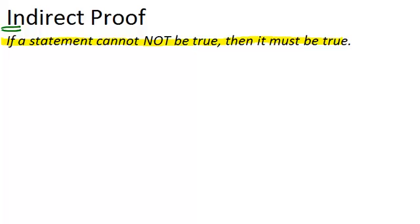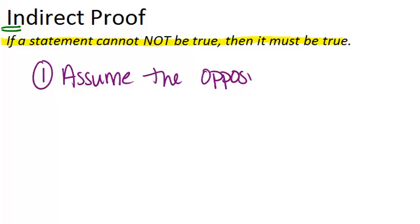So when you do an indirect proof what you always do to start is assume the opposite of what you want to show is true. So if you're trying to show that two sides are congruent you would start by assuming that those two sides are not congruent.